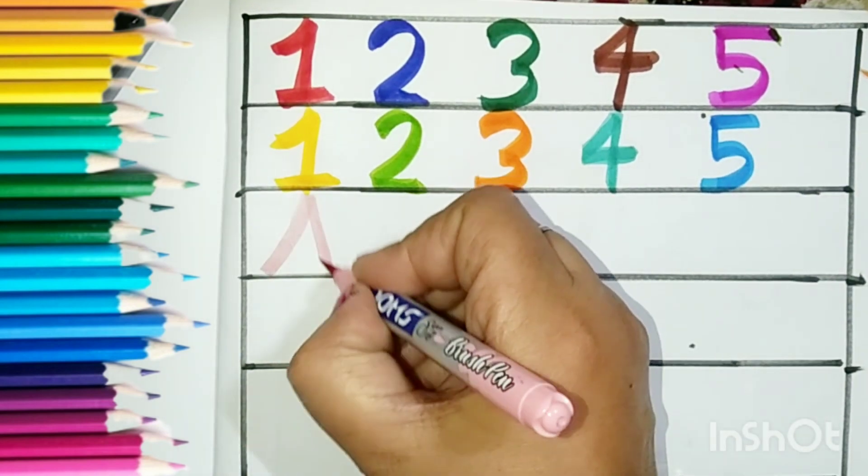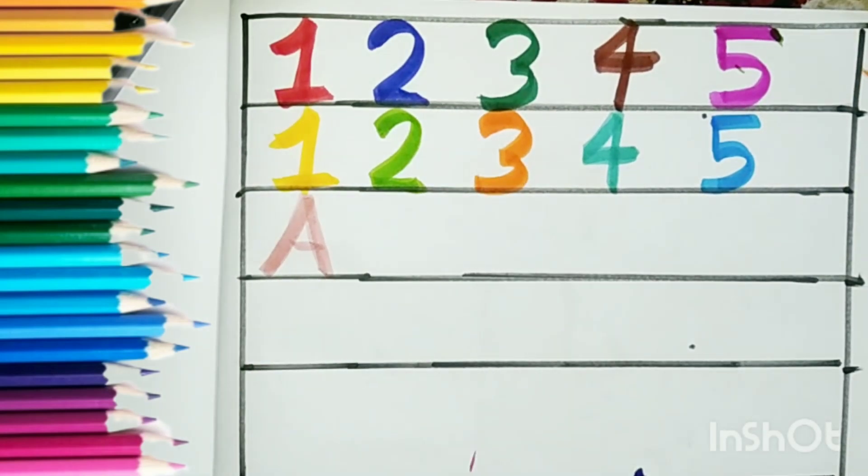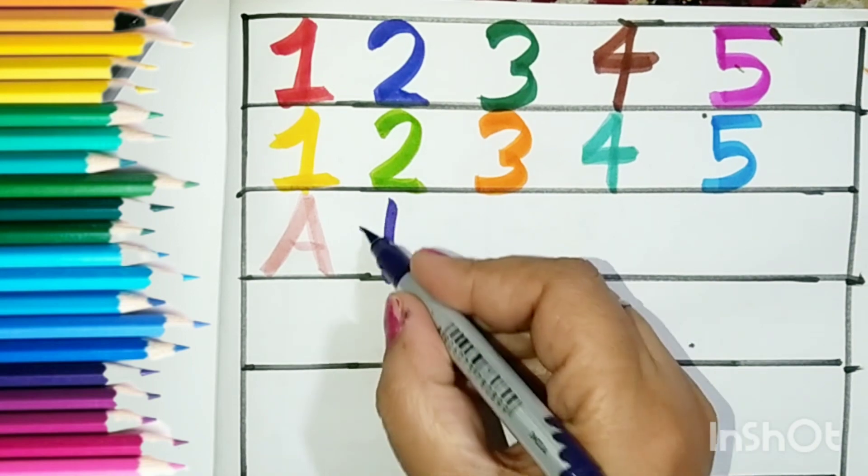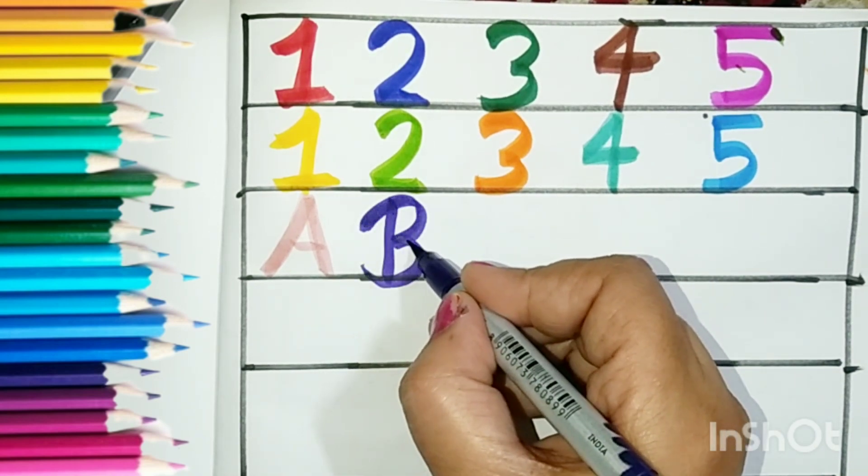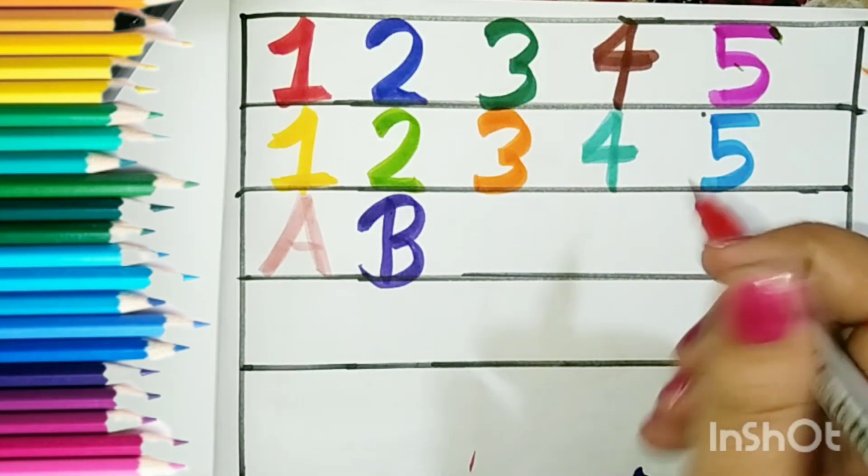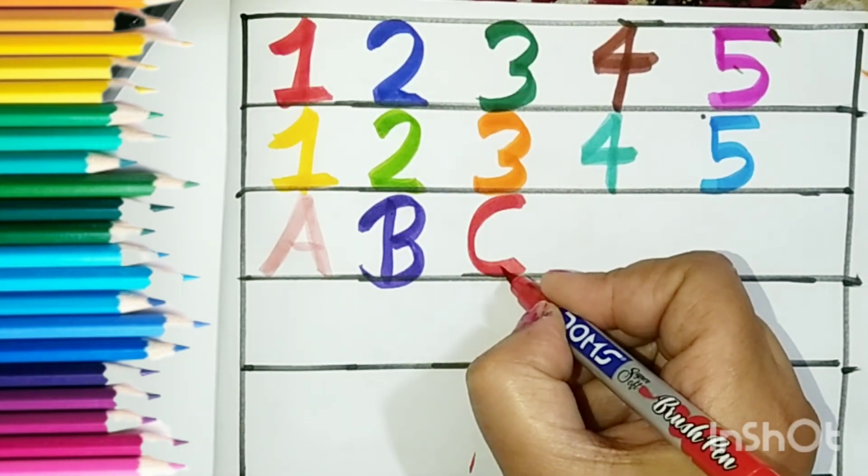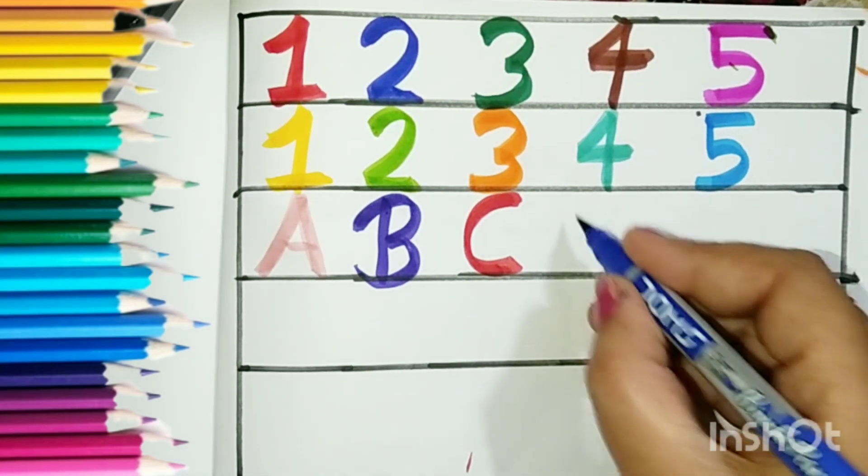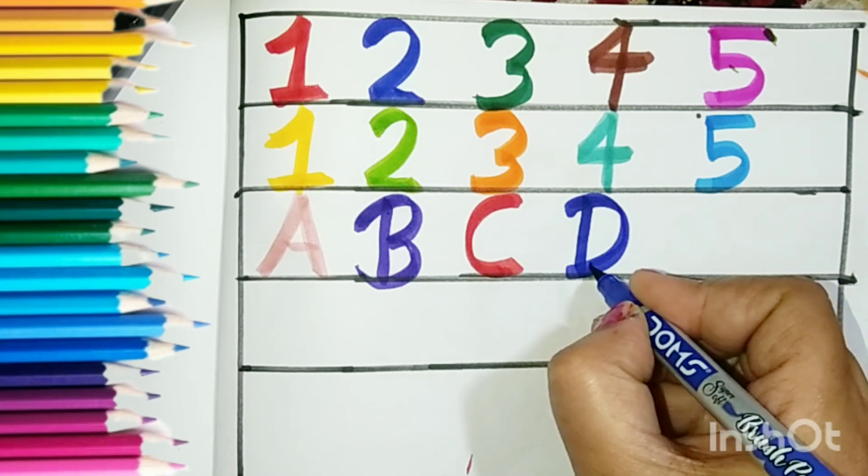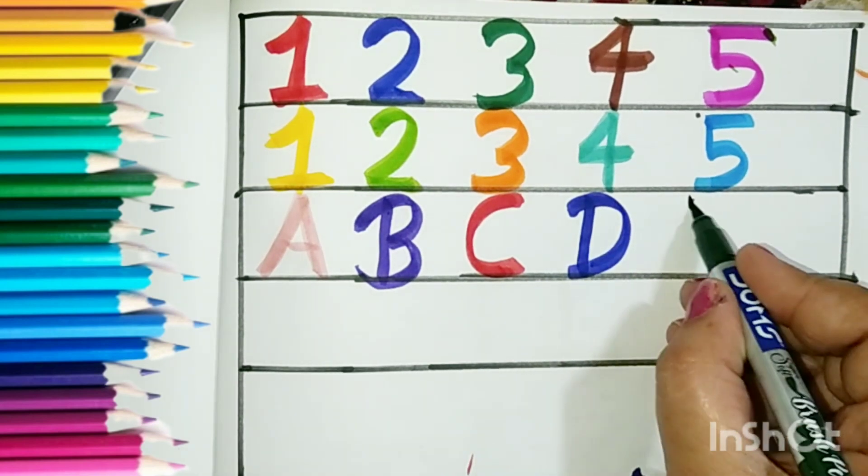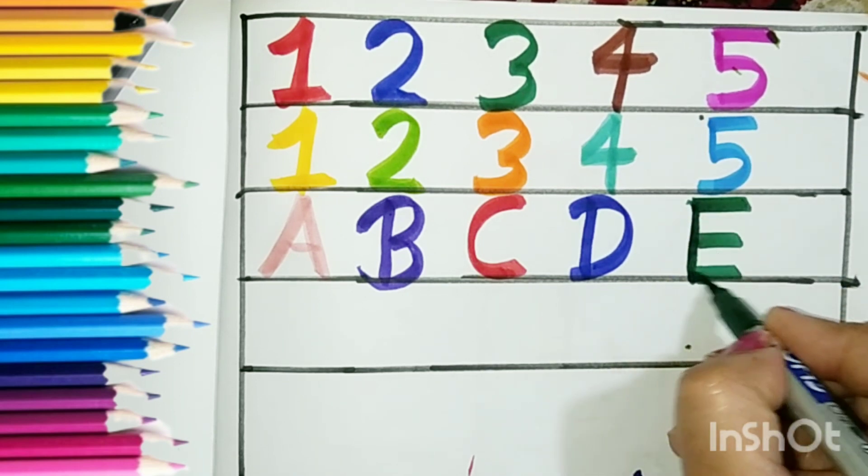A for apple. A for apple. B for ball. B for ball. C for cat. C for cat. D for dog. D for dog. E for elephant. E for elephant.